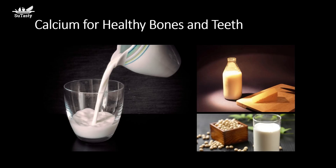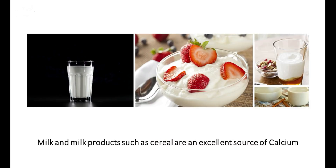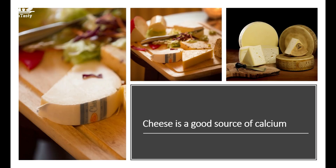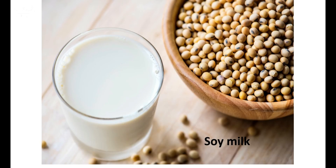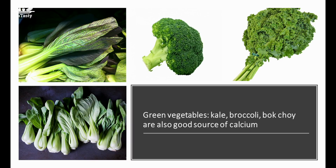The sound sources of calcium in foods: milk and milk products, such as yogurt and most cheeses, are the best sources of calcium. One cup of milk provides about 30% calcium of the recommended dietary allowance per day for adults aged 19 to 50 years old. RDA, or recommended dietary allowance, is an average daily level of intake sufficient to meet the nutrient requirements of nearly all healthy people. Green vegetables such as bok choy, kale, and broccoli are also good sources of calcium.